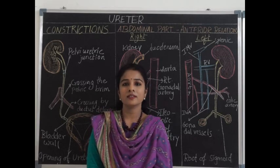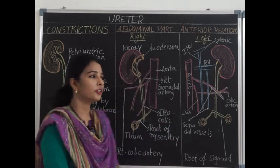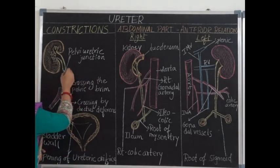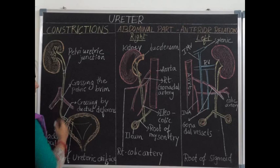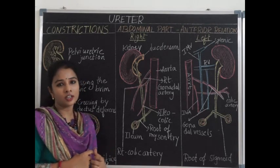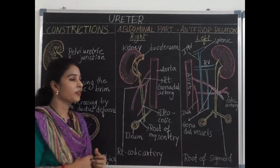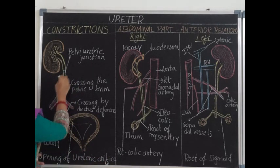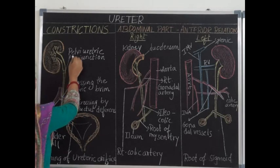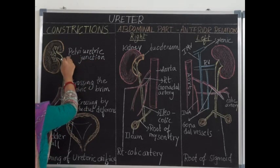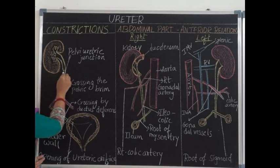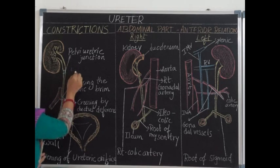There are five ureteric constrictions, and it is very important to know their sites because these are the potential sites for obstruction by calculi — that is, ureteric stones or renal stones. The first ureteric constriction is present at the pelvi-ureteric junction, that is the junction between the renal pelvis and the ureter proper. It is present at the level of the lower pole of the kidney, at the level of L3 — the third lumbar vertebra.